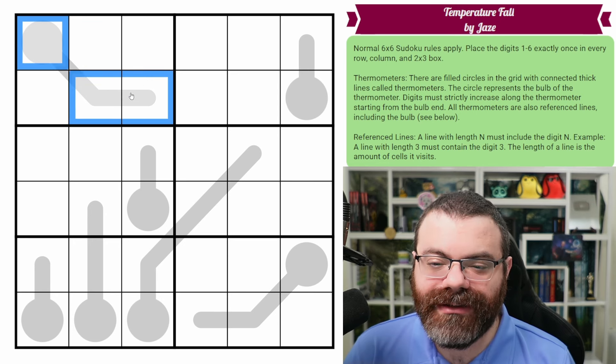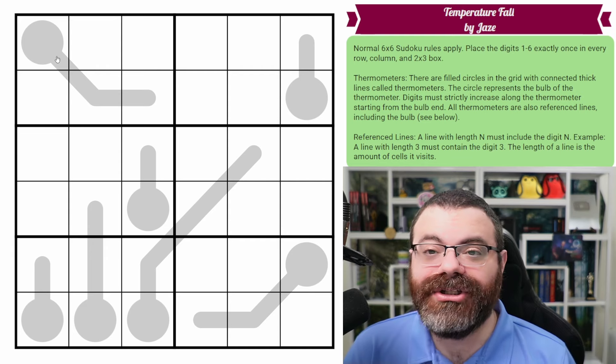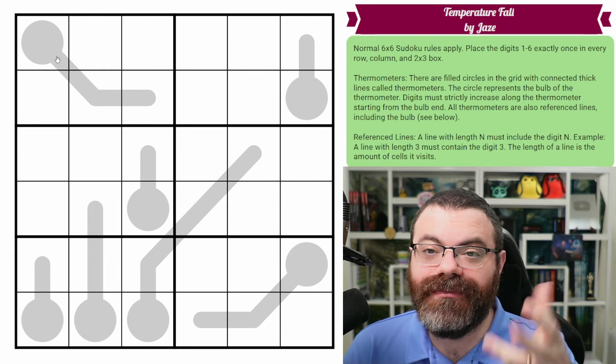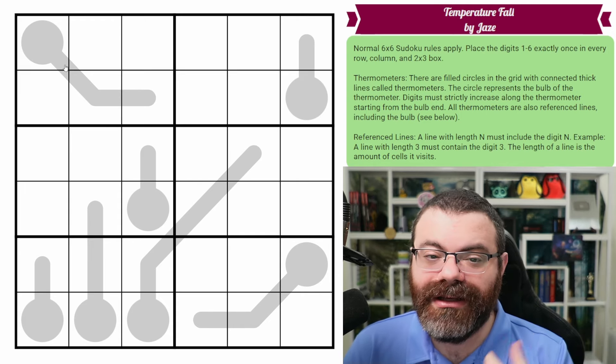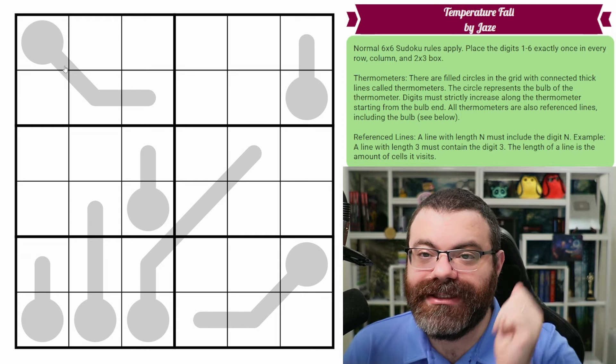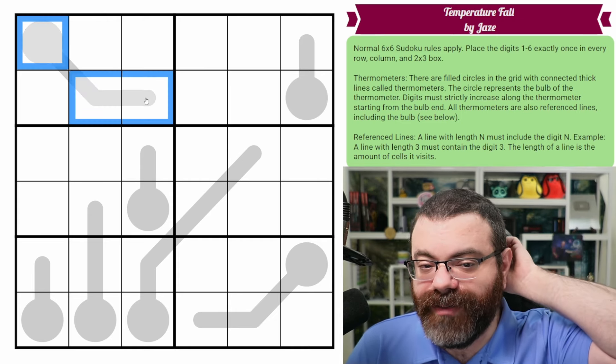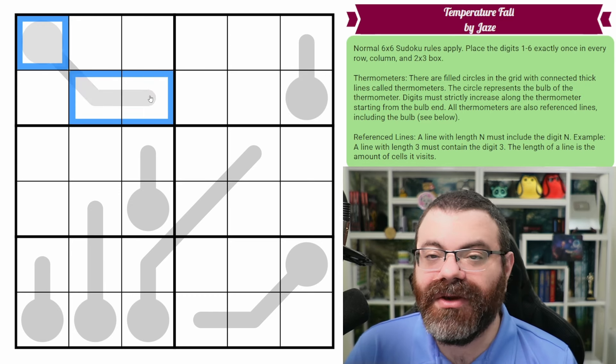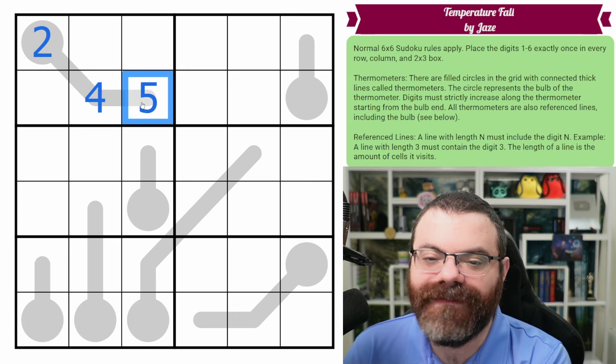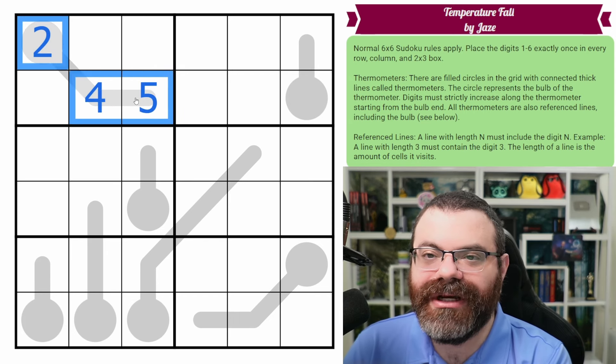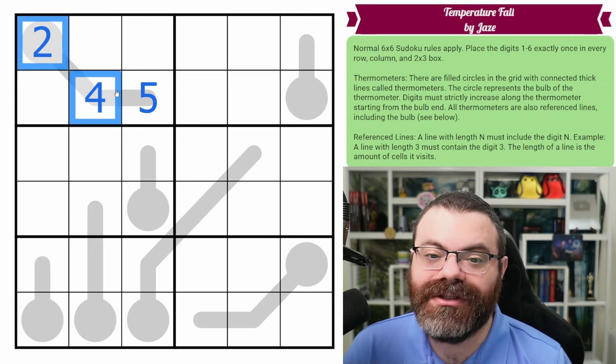We also have thermometers in the grid. These are these lines with a bulb end, a circle at the end, which we call a bulb. If you imagine one of those thermometers that uses mercury, where you've got the bulb and then you've got the stick coming out of it. As the mercury rises, the temperature is higher. So the numbers on the stick are higher. So the numbers on the thermometer have to get higher from the bulb end, but it doesn't have to be equidistant or consecutive or anything like that. So we could do say two, four, five, and that would be perfectly fine. They just have to get strictly bigger as you move along and strictly just meaning can't be the same, can't be smaller. It's strictly larger.